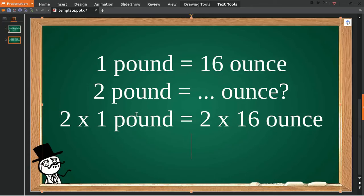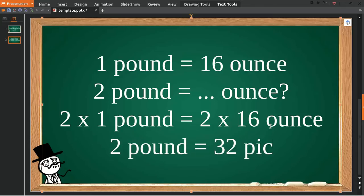Okay, now 2 multiplied by 1 is 2 pounds, and it's equal to 2 multiplied by 16, which equals 32 ounces. So 2 LB equals 32 oz.